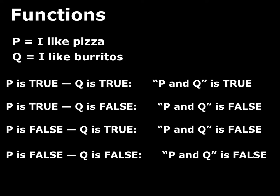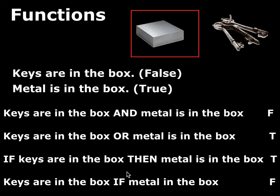Recall — this is something you know. For conjunction, if your friend likes pizza but doesn't like burritos and they say 'P and Q,' you know it's a lie. You also know all the other cases. For the keys/box setup: you know 'keys are in the box or metal is in the box' is true; 'if the keys are in the box then metal is in the box' is true; and 'keys are in the box if metal is in the box' is false. These are all things you know — we're just reminding you of what's already there.